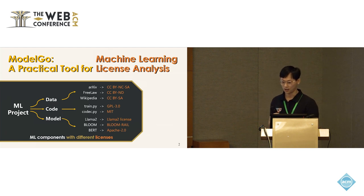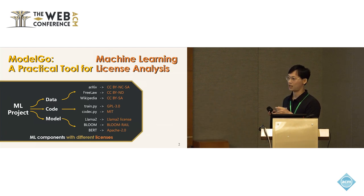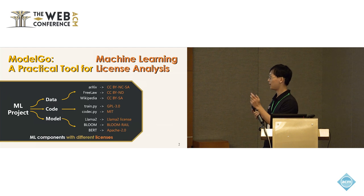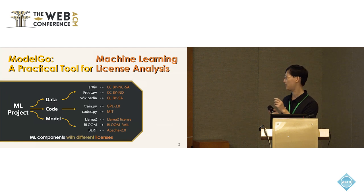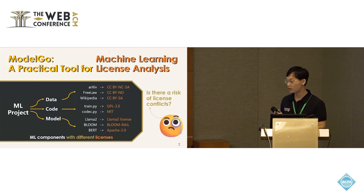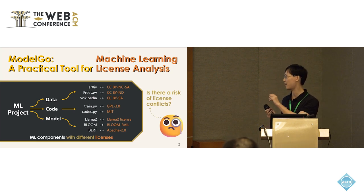For example, the Wikipedia data may be licensed as Creative Commons BY-SA, and the code you use to train your model may be licensed as GPL, and the model may have a model license such as a LLaMA 2 license. So the question is, if we use these components in your machine learning project, is there a risk of license conflicts?